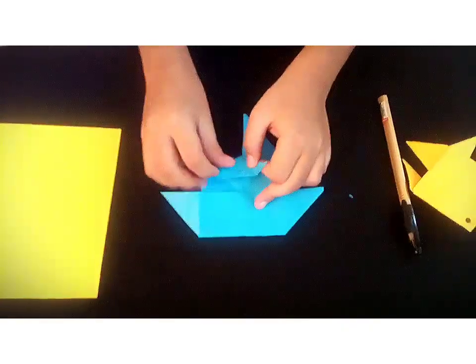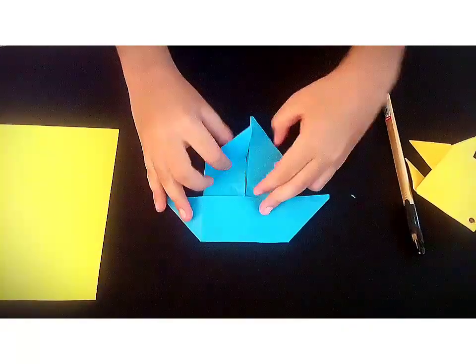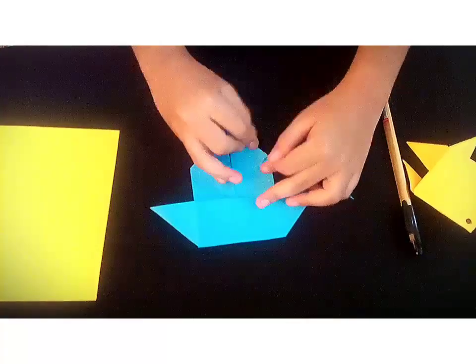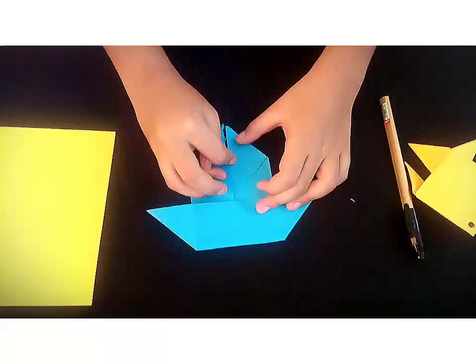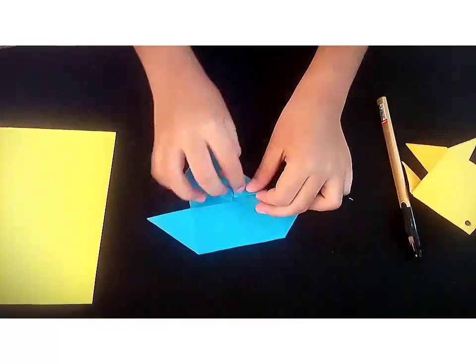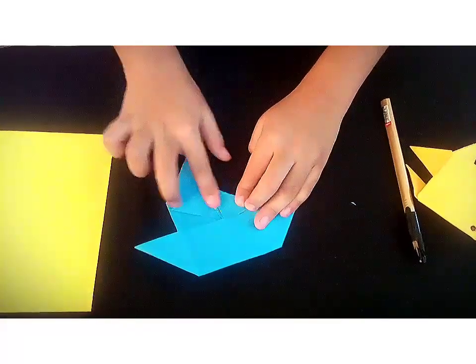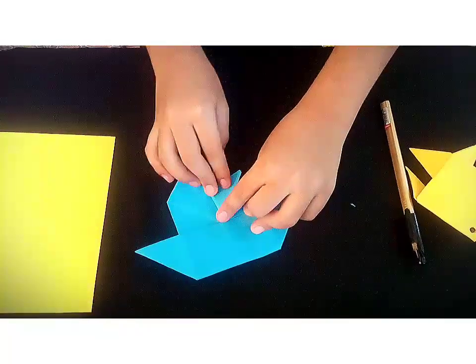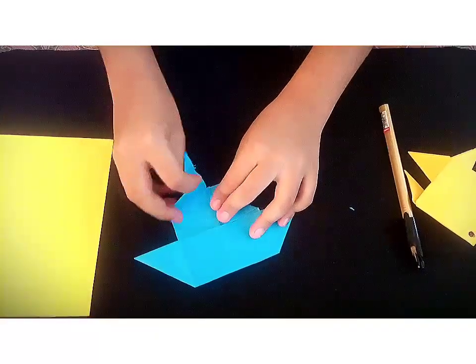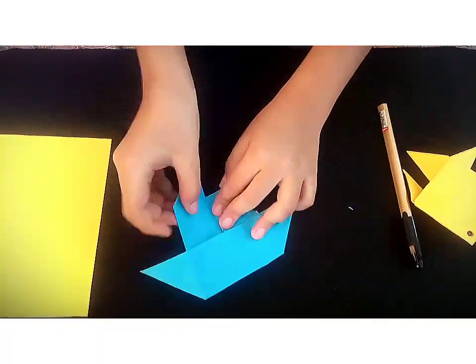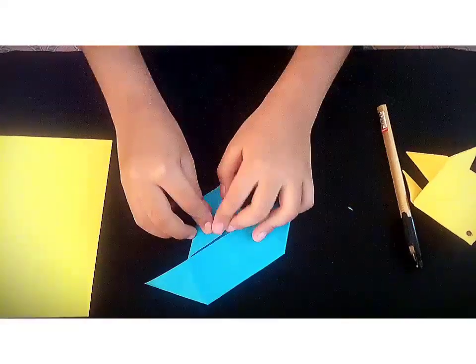Now we will take this corner. And you will make this square here. We will make this square into a triangle. And back again. Now you will do the same for the other one.